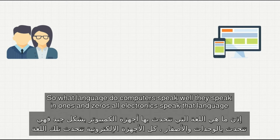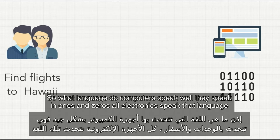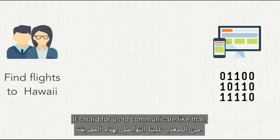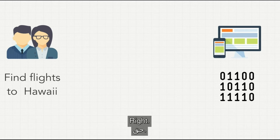So, what language do computers speak? Well, they speak in 1s and 0s. All electronics speak that language of on or off, 0 or 1. But writing 1s and 0s would be gibberish for us. It's hard for us to communicate like that.